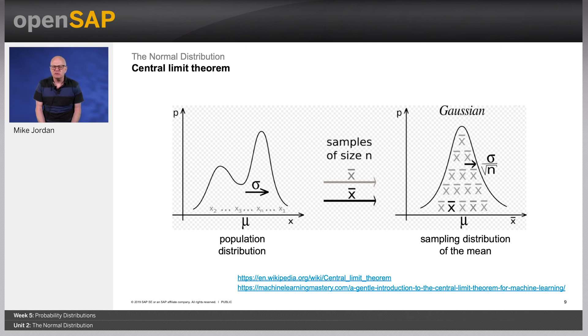In an experiment, suppose that a sample is obtained containing a large number of observations, where each observation is randomly generated in a way that does not depend on the values of the other observations, and that the arithmetic average of the observed values is calculated. If this procedure is performed many times, the central limit theorem says that the distribution of the average will be closely approximated by a normal distribution. The central limit theorem establishes that when independent random variables are added, their properly normalized sum tends towards a normal distribution, even if the original variables themselves are not normally distributed.